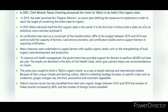The first step was in 2003, when Chief Minister Pavan Chamling announced the vision for Sikkim to be India's first organic state. In 2010, the state launched the Organic Mission — an action plan defining measures to implement in order to convert the entire state to organic. In 2015, Sikkim declared itself the first organic state in the world.